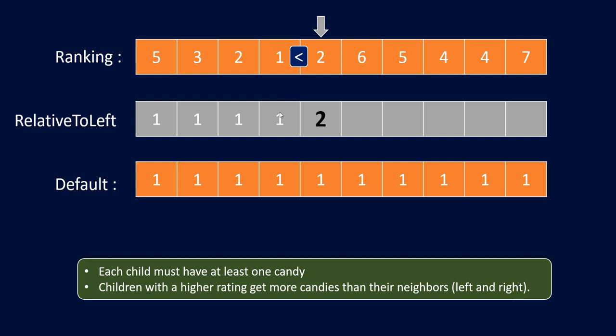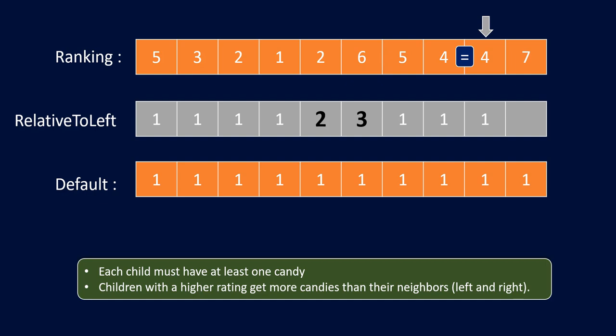We will add one additional candy from the candy that this person has got, so it becomes 1 plus 1 which is 2. Similarly, when we go to the person with 6 as a ranking, we know this person has a rank higher than its left neighbor, so we give one more additional candy — giving 3 candies. Next we go to 5, and since 5 is less than 6, we give that person one single candy. Similarly with 4 and 4. With 7, since it is higher than 4, we give this person one extra candy compared to the person next to him. So here are the candies we need to give when taking the left neighbor into consideration.